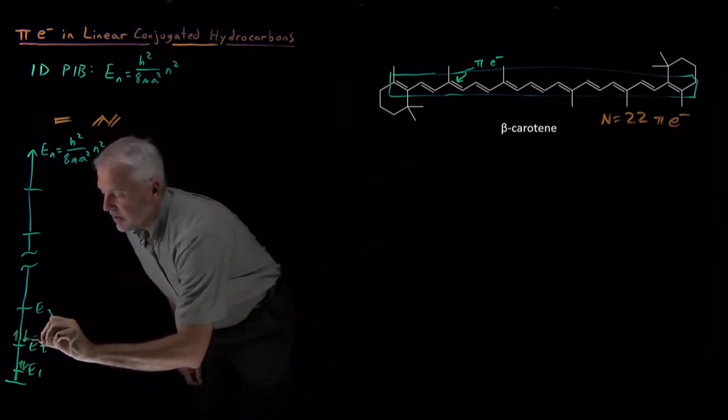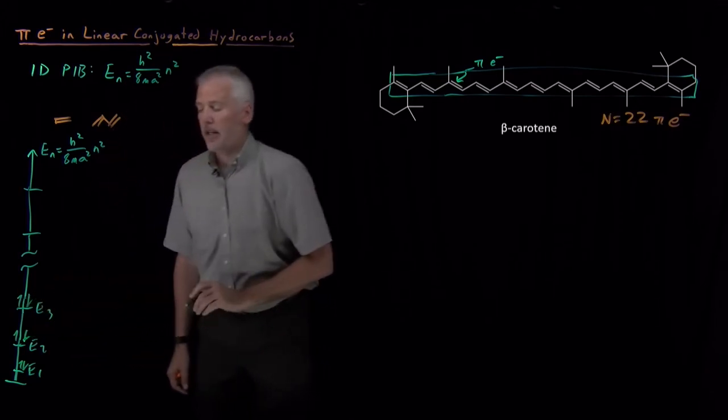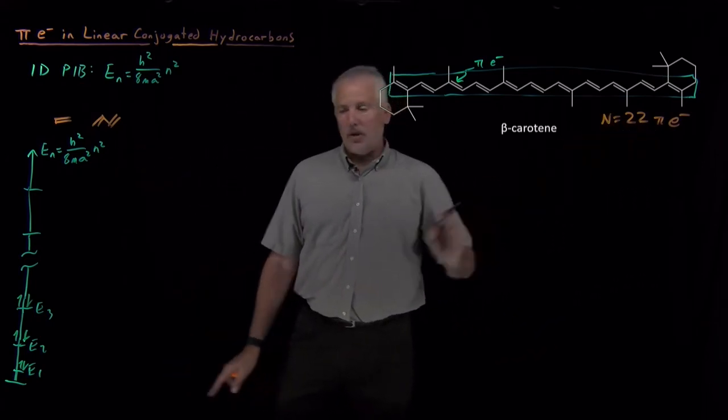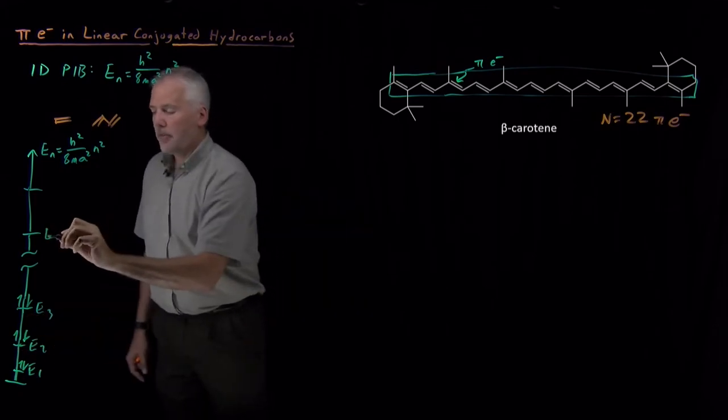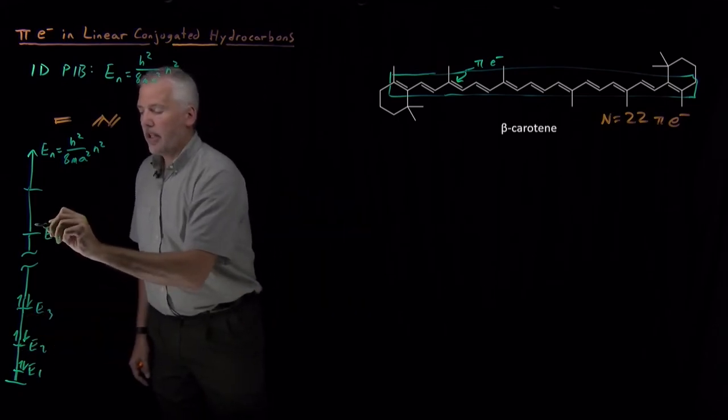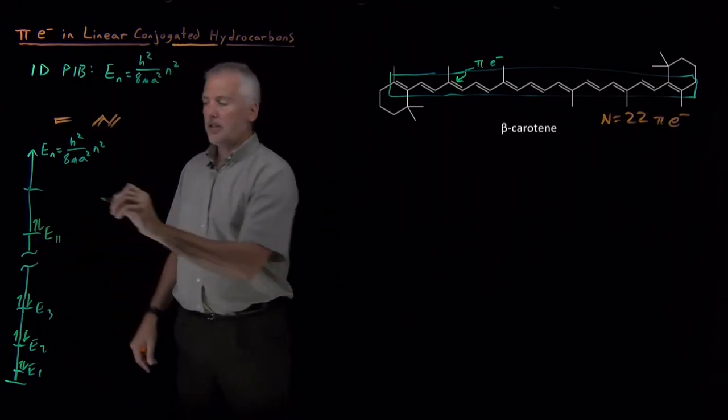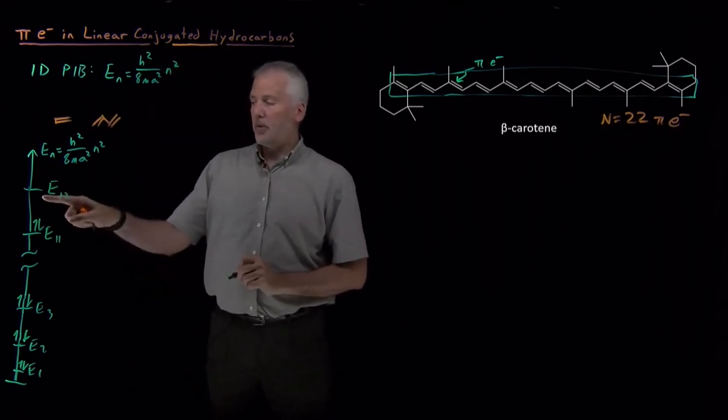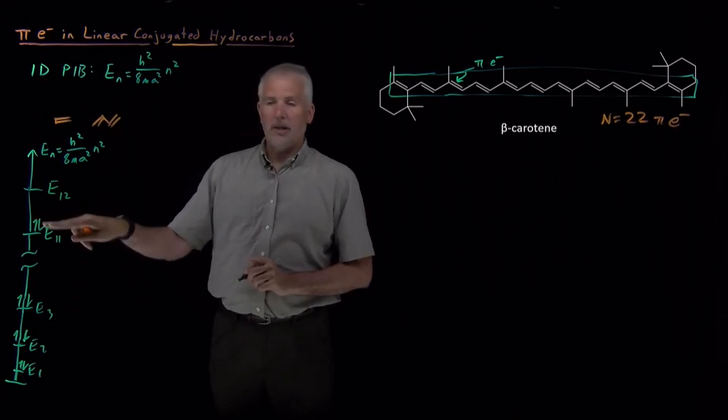Hund's rule also says things like I fill singly first, so I put one electron in here, and then I put the second one in there before moving up to the next level. But if I have a total of 22 pi electrons, and I'm filling them up two electrons per level, I'm going to get all the way up to the 11th energy level. I'll put two electrons in there. Those are my 21st and 22nd electrons. And then the 12th energy level, E12, is empty because I've used up all my electrons climbing this ladder.